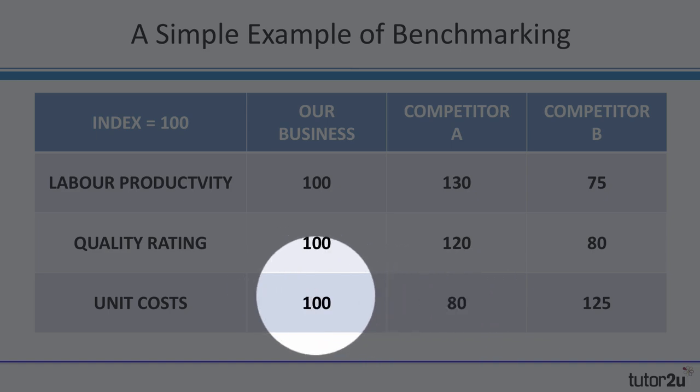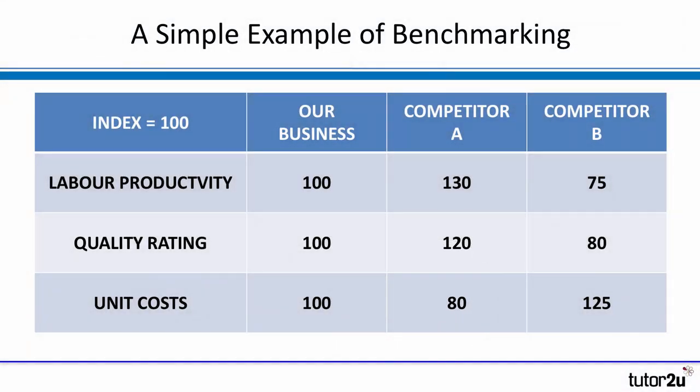In terms of unit costs, our index is 100 and competitor A's is 80, meaning they are 20% more efficient with 20% lower unit costs. Based on this simple benchmarking exercise, competitor A appears to have a significant advantage over our business, while competitor B shows indexes that are significantly worse. Benchmarking then asks: why is competitor A's productivity 30% higher? What can we do to improve and get close to their performance? Why are their products higher rated for quality, and why are they so much more efficient? It's not just about doing the numbers — it's about the actions that follow and interrogating the data to identify ways to close the performance gap.